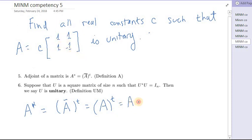So A* is actually equal to A in this case, and we have C times [1 1; 1 -1].